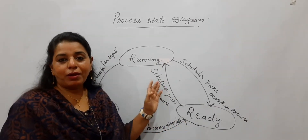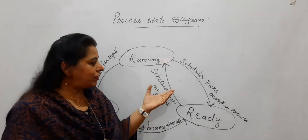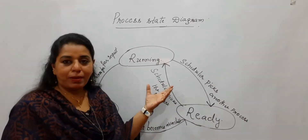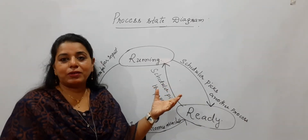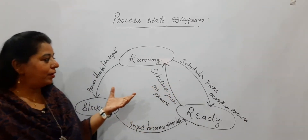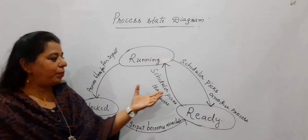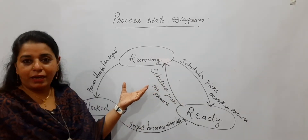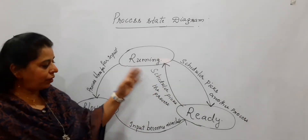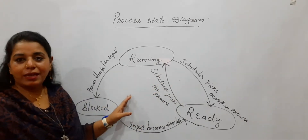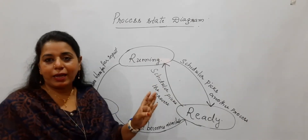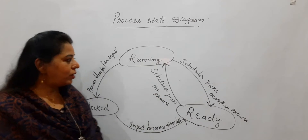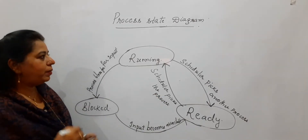Students, you know there will be a question for 4 to 5 marks: explain the process state diagram, or explain the different states of a process with a labeled diagram. You are going to sketch this and give the explanation, so I shall give you the explanation.